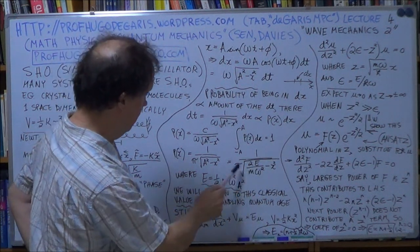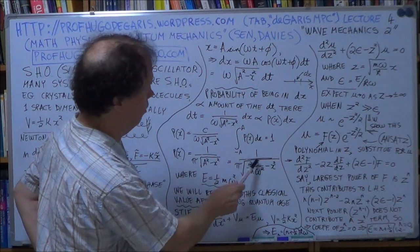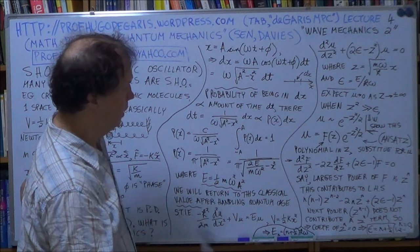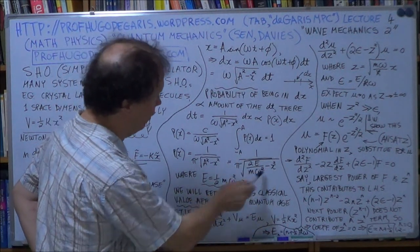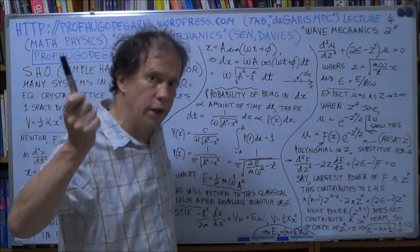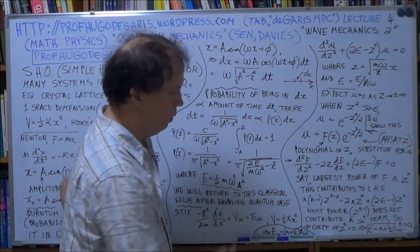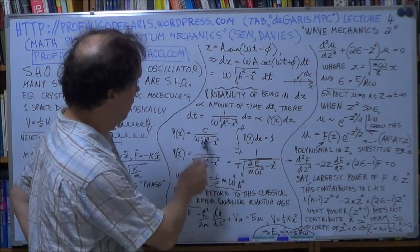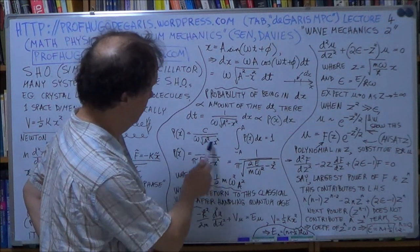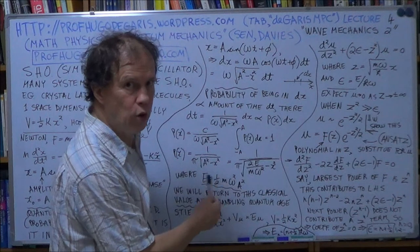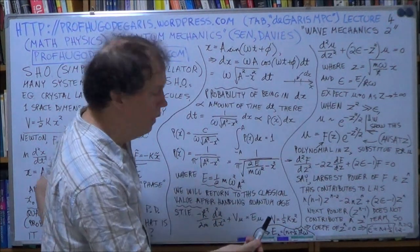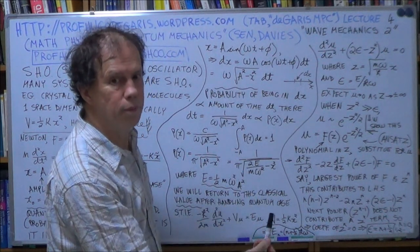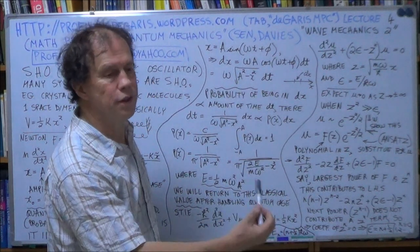Instead of a squared, we call that 2E over m omega squared. Why on earth do you do that? Well, because in this form, it's very similar to what we will get in the future for the quantum case. So we rewrite the classical result in a form that will become familiar to the quantum case, the quantum mechanical analysis of simple harmonic oscillator.